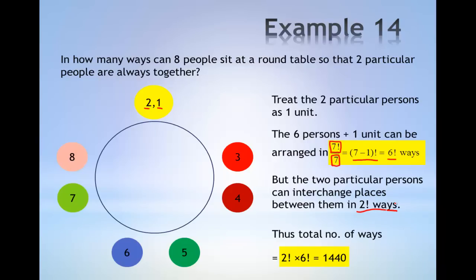Therefore, the total number of ways is given by two factorial multiplied by six factorial, which gives 1440.